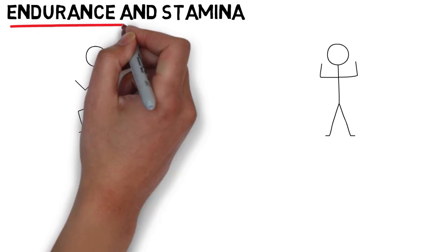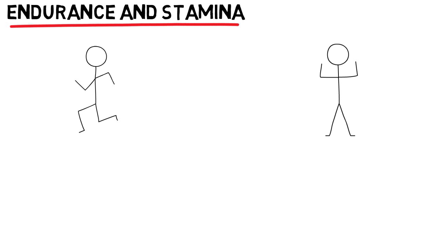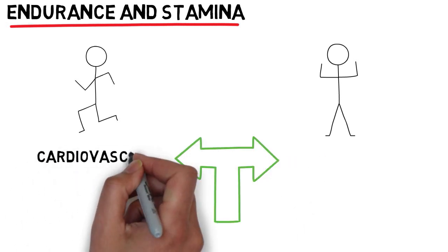This is more commonly known as endurance or stamina. There are two types of endurance: cardiovascular and muscular. This section is going to teach you the difference.